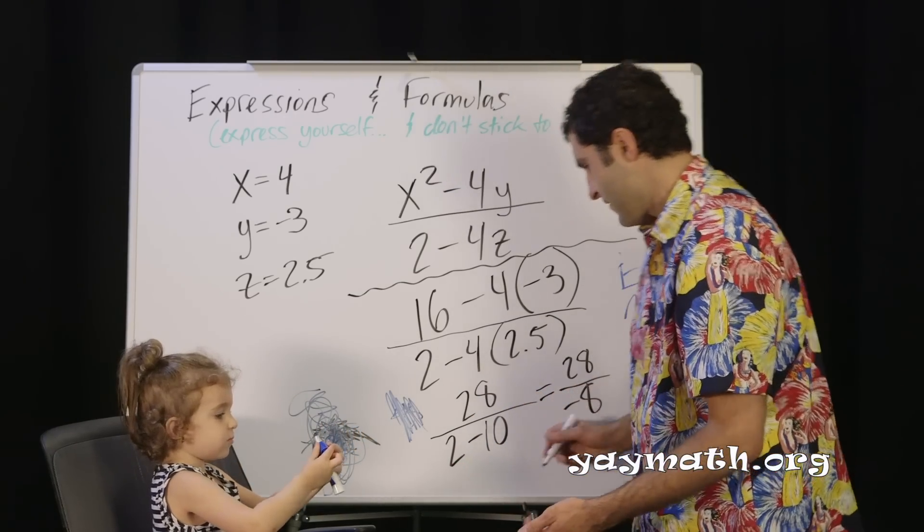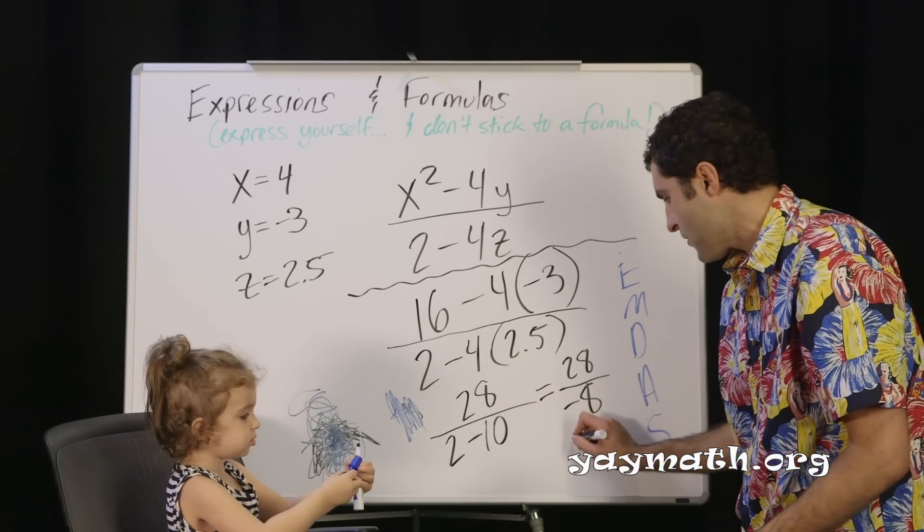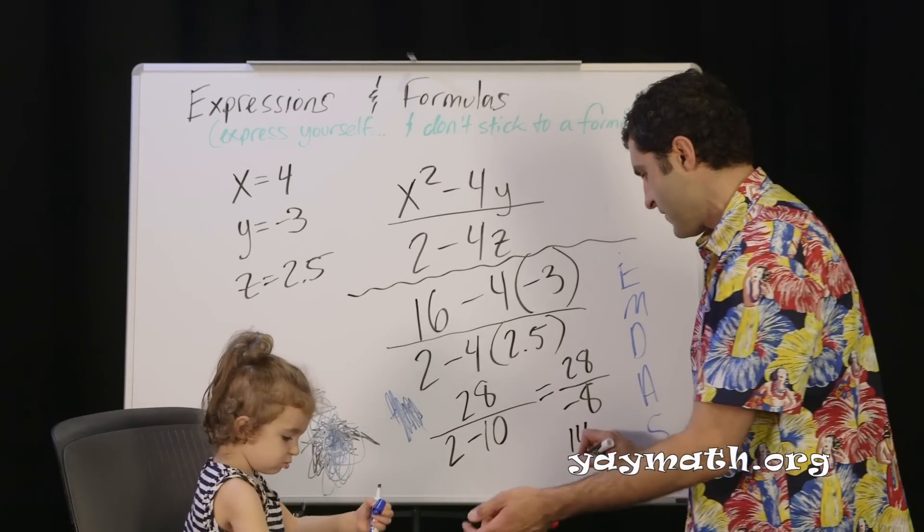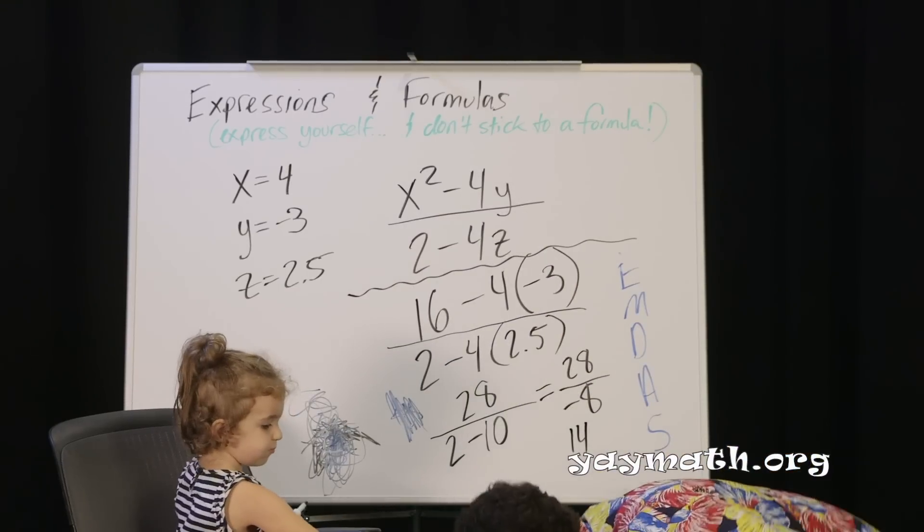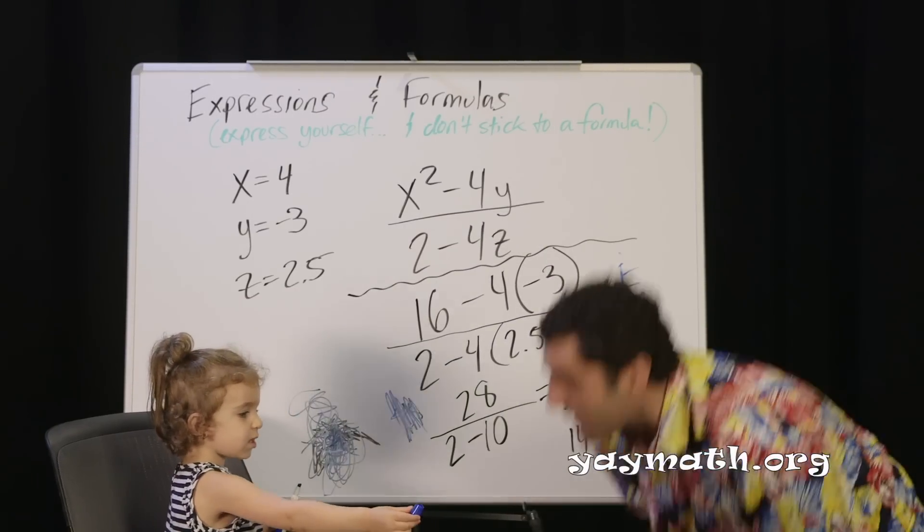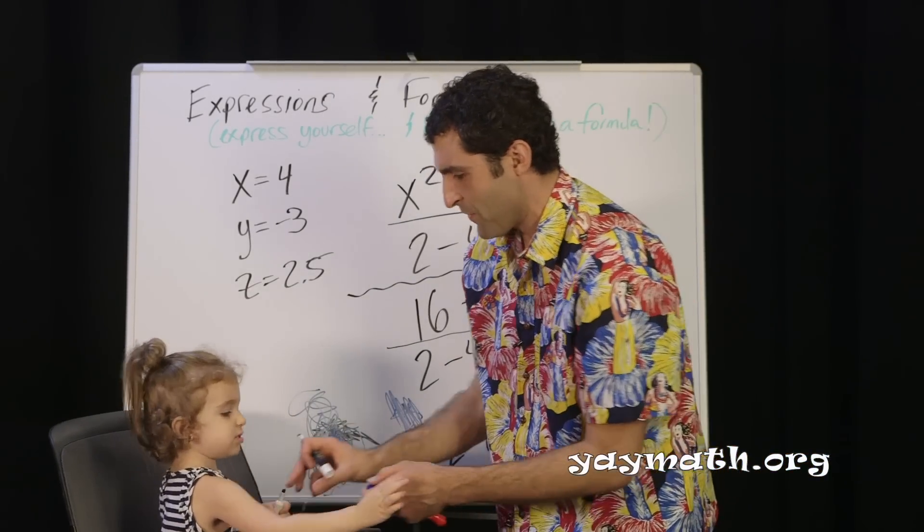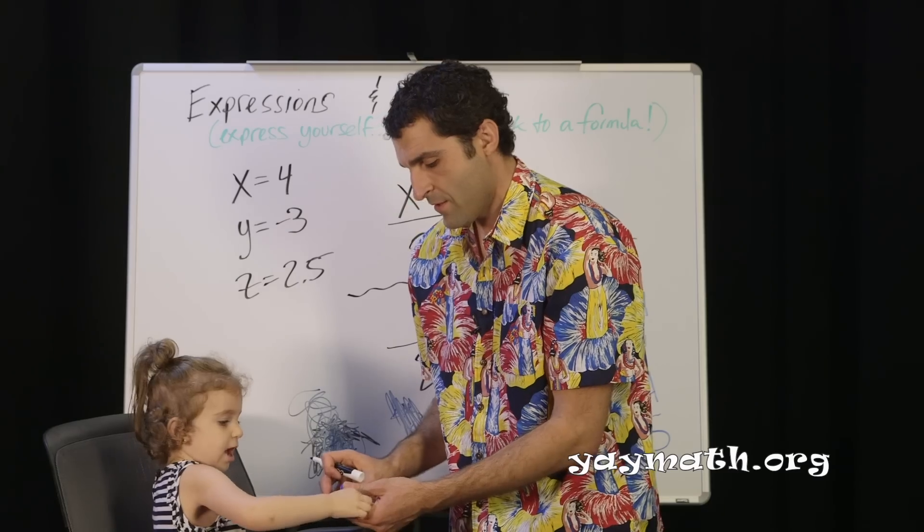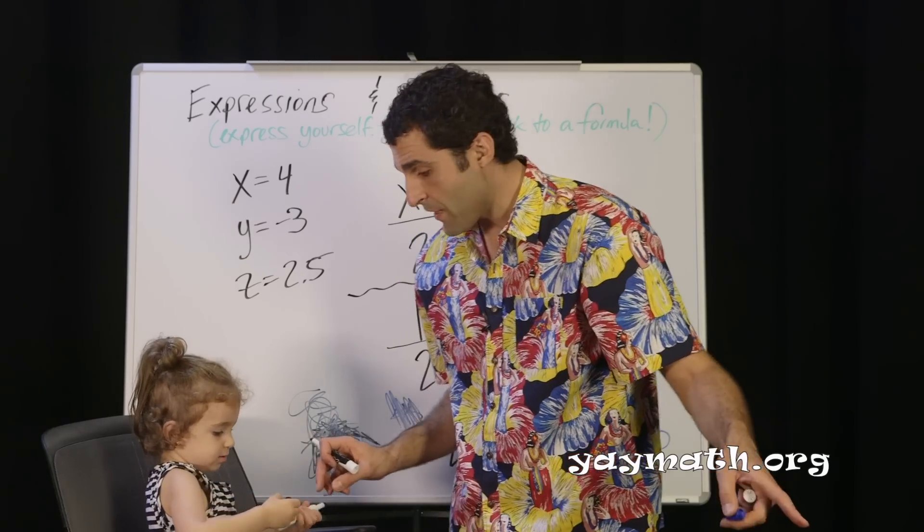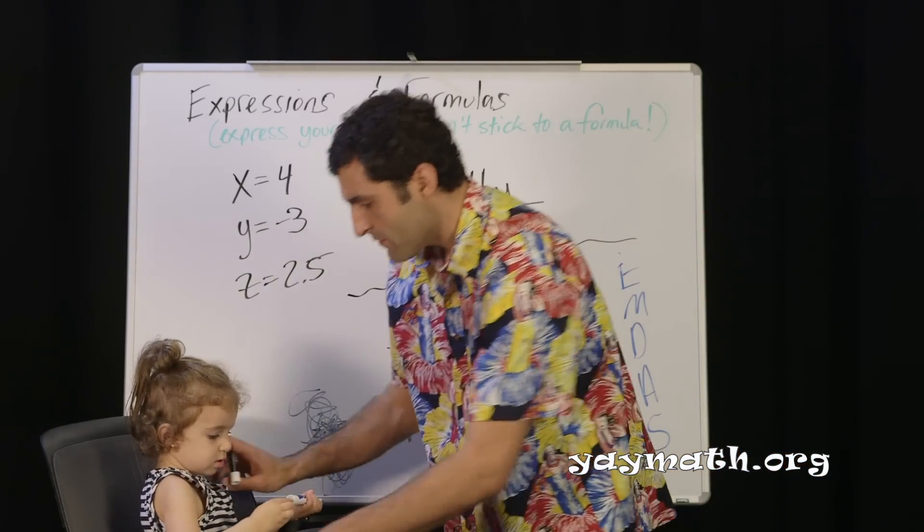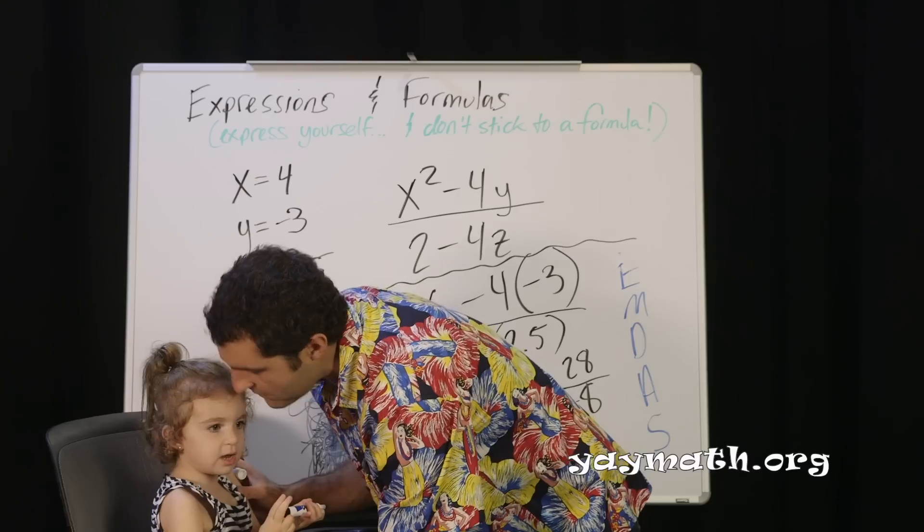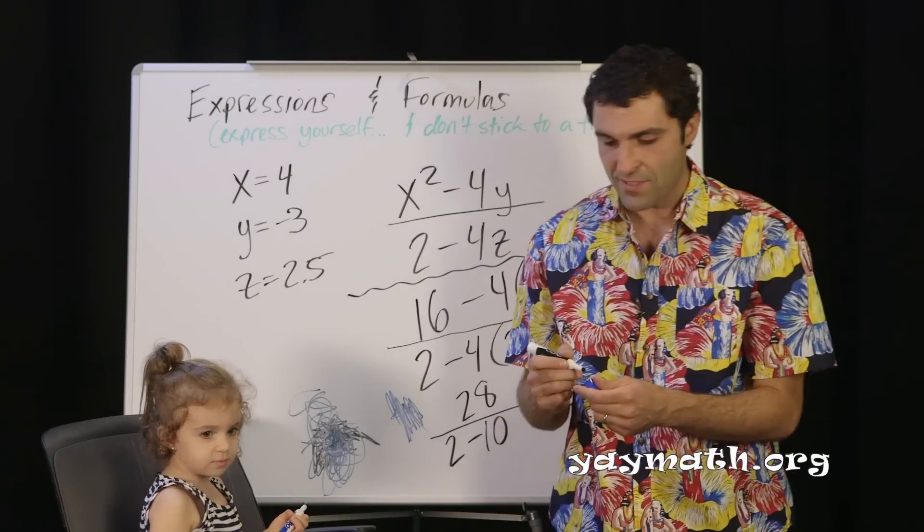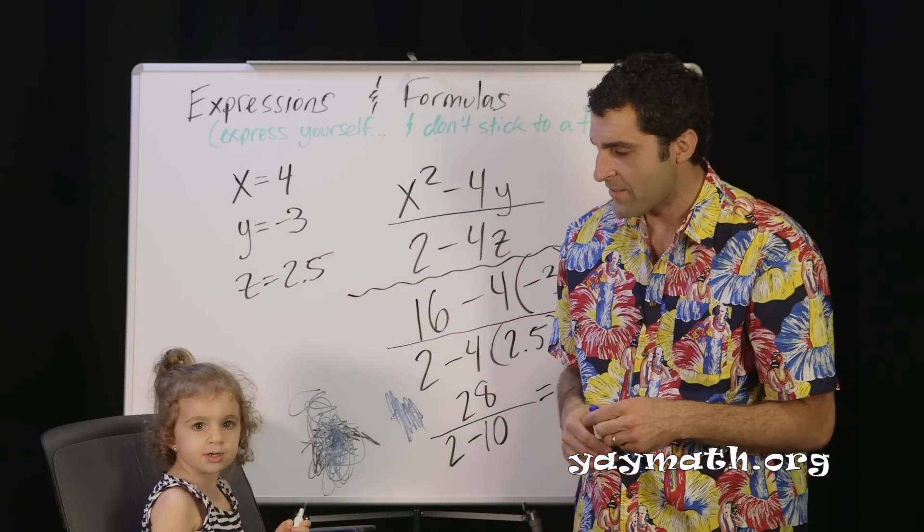Divide both by negative 2 or 2: 14 over, actually 4. I think we're going to have to pivot from this one. You know what, there's another board there. Can you write on that one now? You ready to write on that one? All right, you want to say bye for a second?